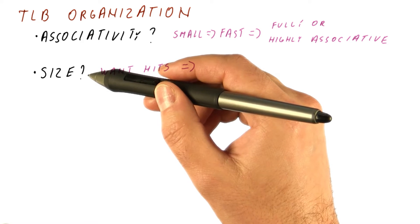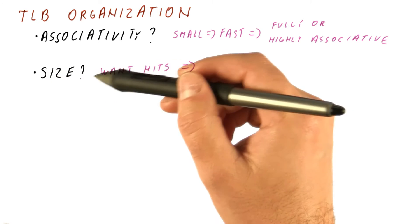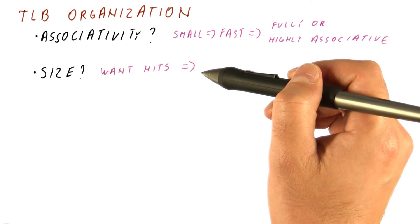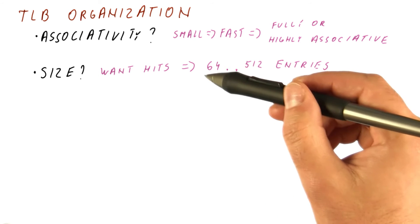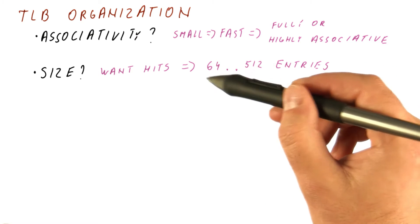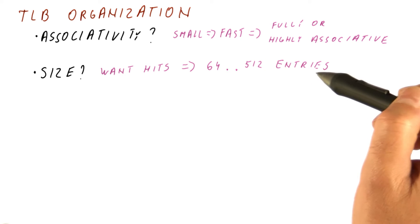We want it to hit at least as often as our cache, so we want it to cover more memory than the cache. So we usually want our TLB to be somewhere about 64 to 512 entries.